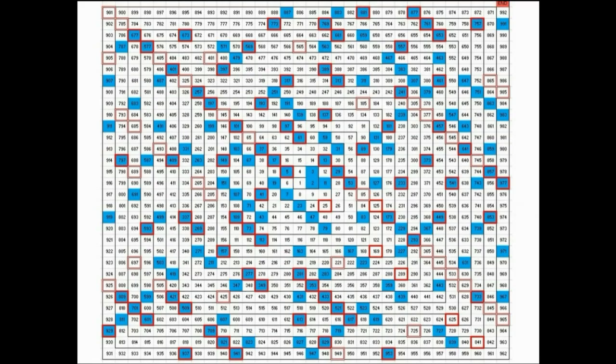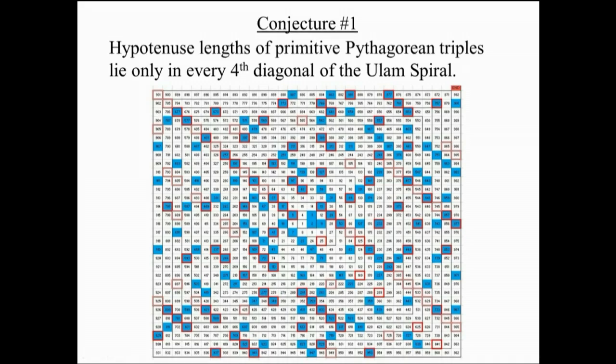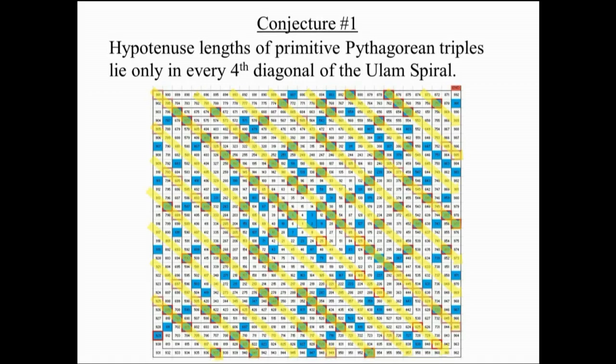Now, you might want to pause the video here and write down what you see, because I have made four, actually five, conjectures based on what I saw. It would be fun to see if your conjectures match my conjectures. Okay, so here's conjecture number one. The hypotenuse lengths of the primitive Pythagorean triples lie only in every fourth diagonal. I'm highlighting the fourth diagonals here. I did a little bit of research, and I think these fourth diagonals are called mod four numbers. I do notice that all these numbers in the fourth diagonals are four apart from each other, and that's what a mod four number is. So why must Pythagorean triples be four apart from each other or some multiple of four apart? Answer this question and you will prove conjecture number one.